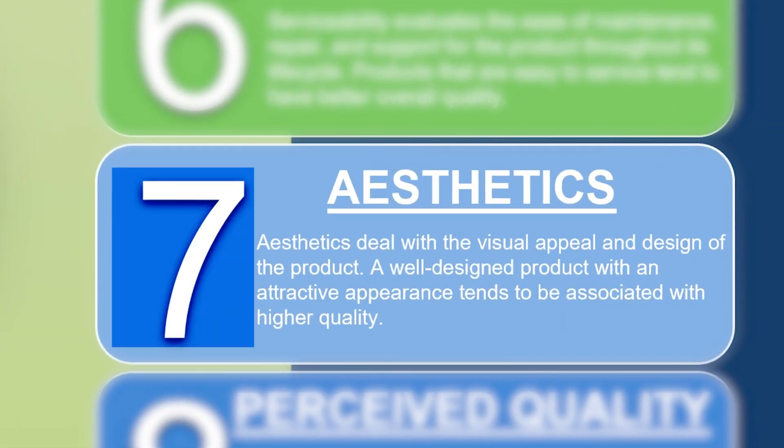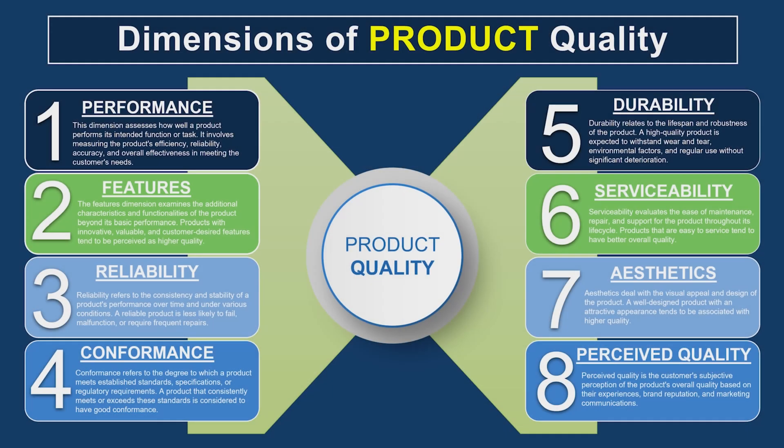Next we have aesthetics — how the product looks, feels, tastes, sounds — all of that is the aesthetics of the product. It can apply to almost anything: your television's sound and picture quality, or food. You see great pictures of food at a restaurant or in a commercial, and then you order it and it arrives looking nothing like what was advertised. That's poor aesthetics — another aspect of quality on which you're being evaluated. Though sometimes food comes out looking exactly like the picture, if you go to the right restaurant.